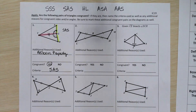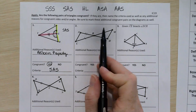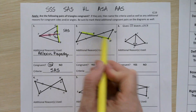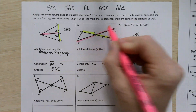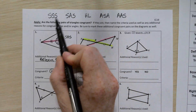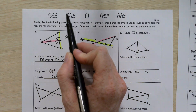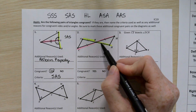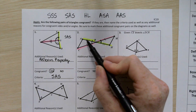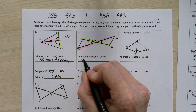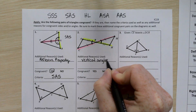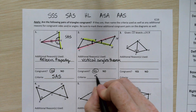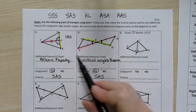In example two, there's no given vocabulary, but two sets of congruent sides are already marked: segment AB matches segment HB, and segment CB matches segment MB. With two S's, I need either a third pair of sides or the included angle. At the intersection of those sides, I see a nice X shape — vertical angles theorem lets me mark those angles as congruent, confirming SAS.